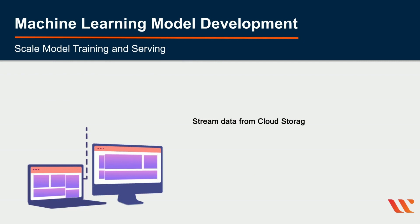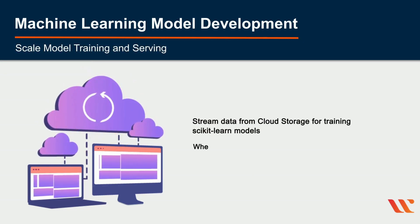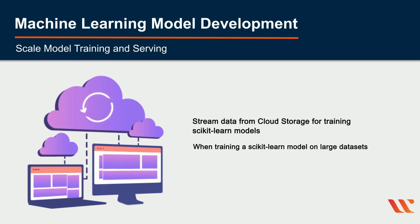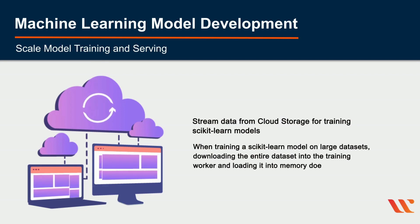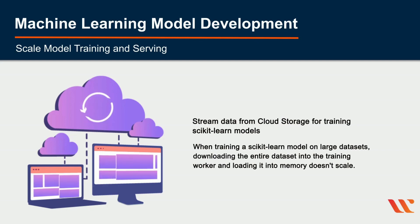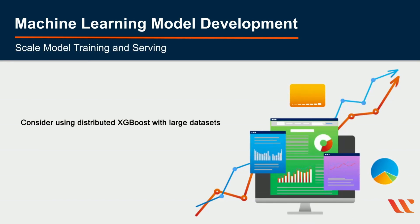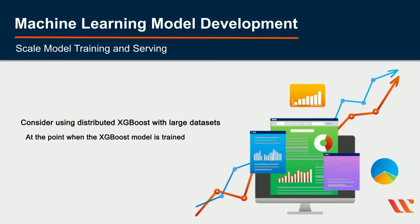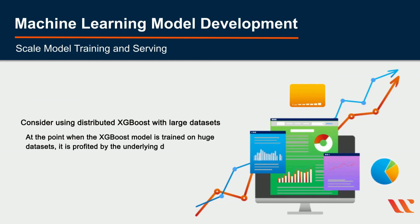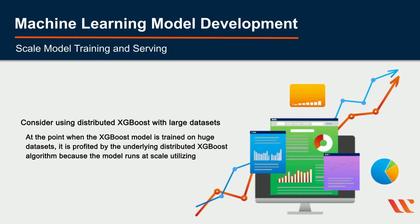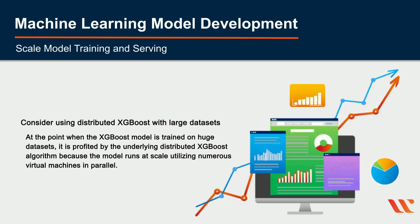Stream data from cloud storage for training scikit-learn models. When training a scikit-learn model on a larger dataset, downloading the entire dataset into the training worker and loading it into memory does not scale. Consider using TensorFlow's stream read file IO API, which is pre-installed on the worker virtual machine. For XGBoost on larger datasets, use the built-in distributed XGBoost algorithm, which runs at scale using multiple virtual machines in parallel.